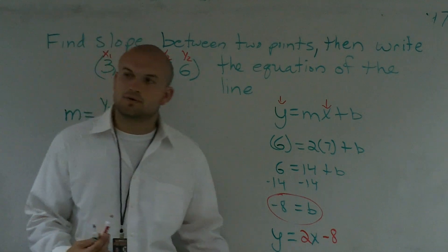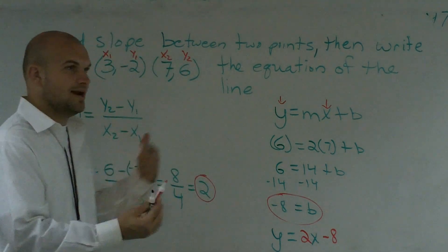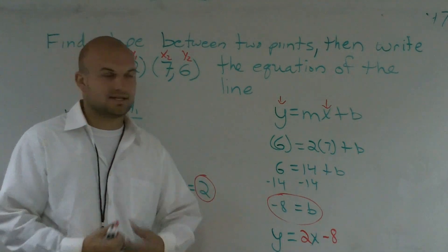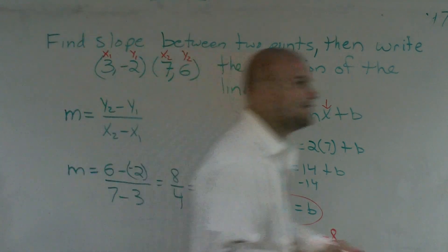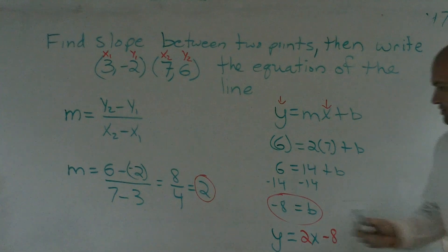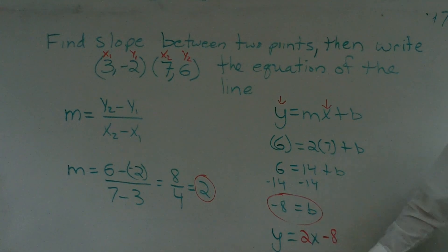So when you're trying to find an equation of a line, whatever you're given, you're going to be given multiple different things. Sometimes you're given a slope, sometimes you're given two points. Whichever way, whatever you're given, you have to make sure you find your slope and your y-intercept. And that's how you can write a line in slope-intercept method.